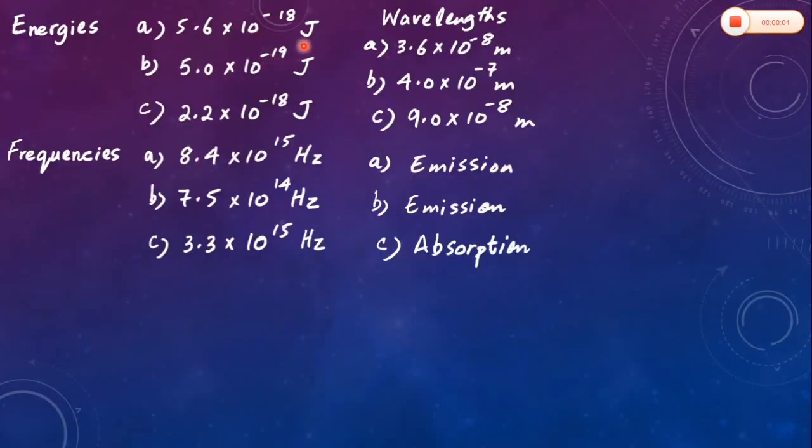So based on the previous explanation, the energies in three cases comes out to be equal to these values and frequencies and wavelengths are calculated using Planck's equation. And as I have already explained that transition A and B correspond to emission spectrum, and C is absorption spectrum because in C part, electron has to absorb some photon in order to jump in from lower energy level to higher energy level.